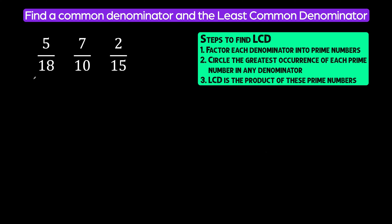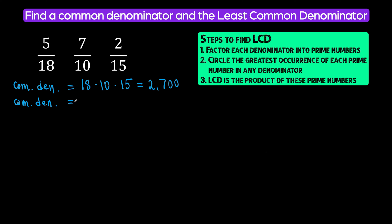Let's look at another example. In this example we have slightly larger denominators: eighteen, ten, and fifteen. To find a common denominator, we can just multiply our denominators — eighteen times ten times fifteen — and the answer will be two thousand seven hundred. That's a large denominator. If we are adding or subtracting fractions, we can find another common denominator that can also work. For example, eighteen times ten is one hundred and eighty, and one hundred and eighty is divisible by fifteen. One hundred and eighty divided by fifteen is twelve.